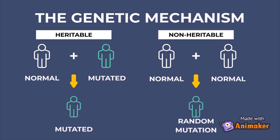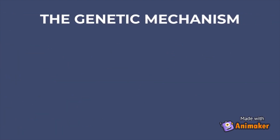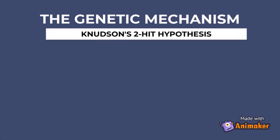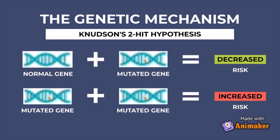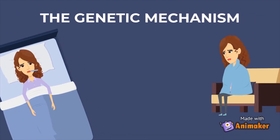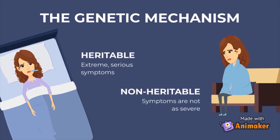Affected individuals could possibly pass the mutation down to offspring via an autosomal dominant mode of transmission. Despite this inheritance pattern, the patient usually develops a second mutation in the normal allele as well, which is necessary for the development of retinoblastoma. This phenomenon is known as Knudson's two-hit hypothesis, which states that both mutated alleles of a gene are necessary for the development of cancers like retinoblastoma. In non-heritable retinoblastoma, the individual does not inherit the mutated RB1 gene; rather, the mutations in both alleles are acquired over time. The symptoms experienced by those with heritable retinoblastoma are more extreme and serious compared to those with non-heritable retinoblastoma.